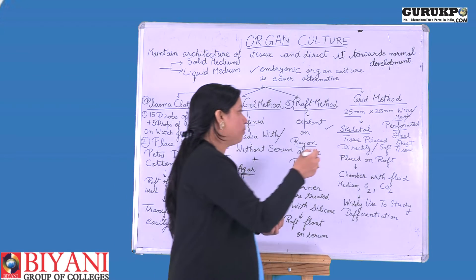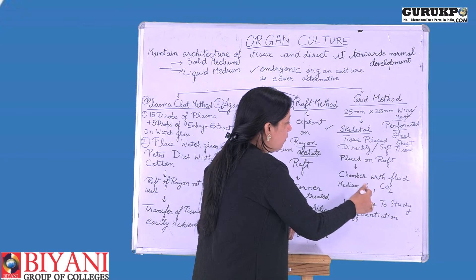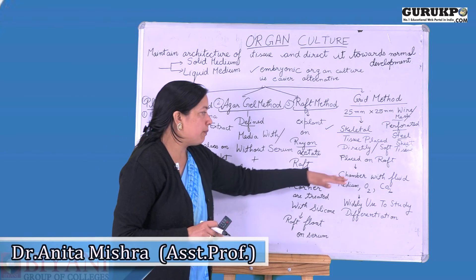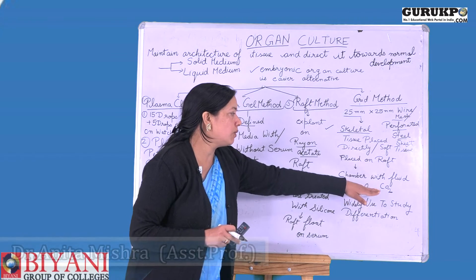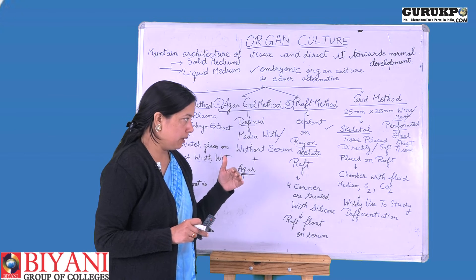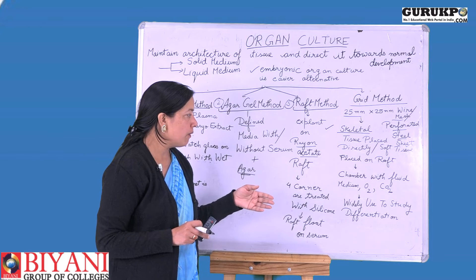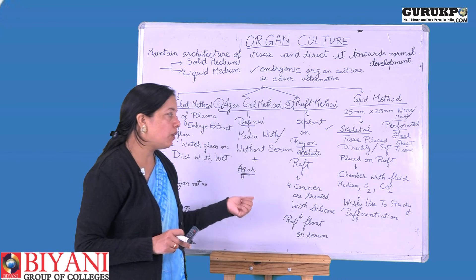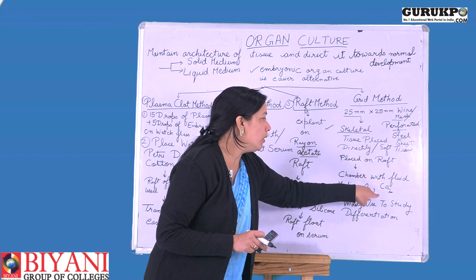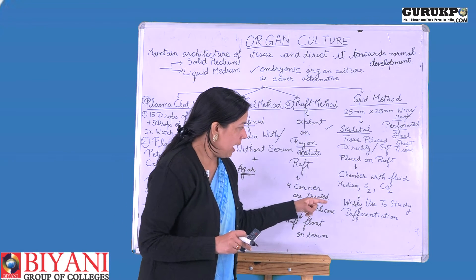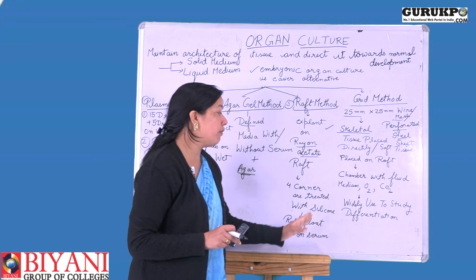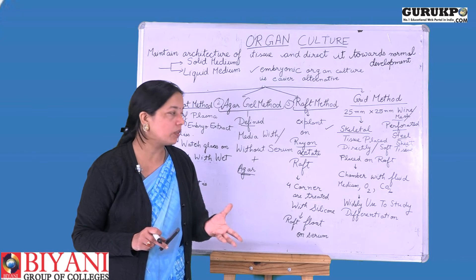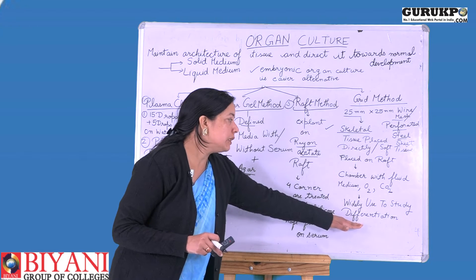In the grid method, we create a chamber containing a liquid medium along with oxygen and CO2 conditions. These oxygen and CO2 conditions are provided to maintain the oxygen requirements of the adult differentiated tissues and organs being cultured. The grid method is currently a very widely used technique for studying the differentiation process — how different types of cells and tissues differentiate and form organs.